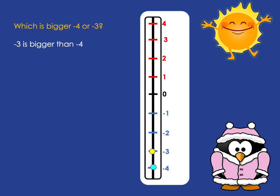In maths we use a symbol to show 'bigger than', written like this: negative 3 > negative 4. It's easy to get confused about which way the sign goes. The way to remember it is that the big open gap must go towards the bigger number — so the open gap points towards negative 3, because it's the bigger number.